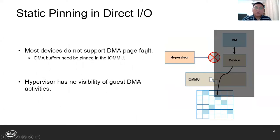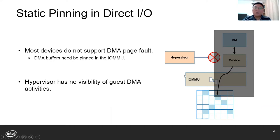However, DirectIO faces the problem of static pinning due to two reasons. The first one is that most devices do not support DMA page faults. That means the DMA buffer needs to be pinned in hardware IOMMU before the DMA operation. By pinned, we mean this buffer may be pre-allocated and mapped in the IOMMU page table, the IPT. Secondly, since the hypervisor has no visibility of the guest DMA activities, it has to assume that all guest pages could be used as a DMA buffer.